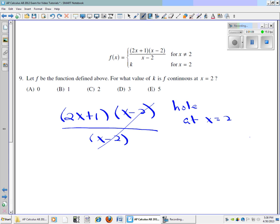So what's left is this 2x plus 1. So we've got our function f of x is equal to 2x plus 1 at the points everywhere except where x is equal to 2. So x cannot be equal to 2.